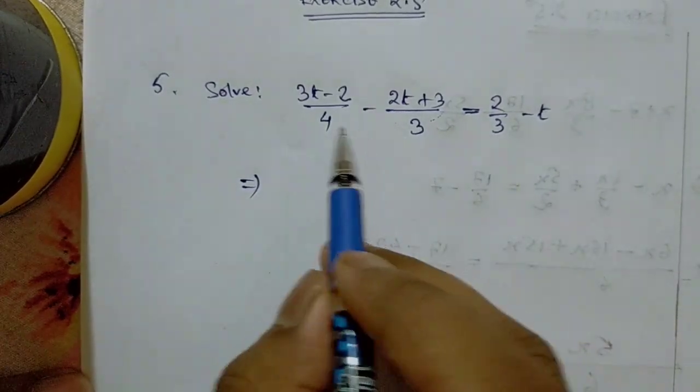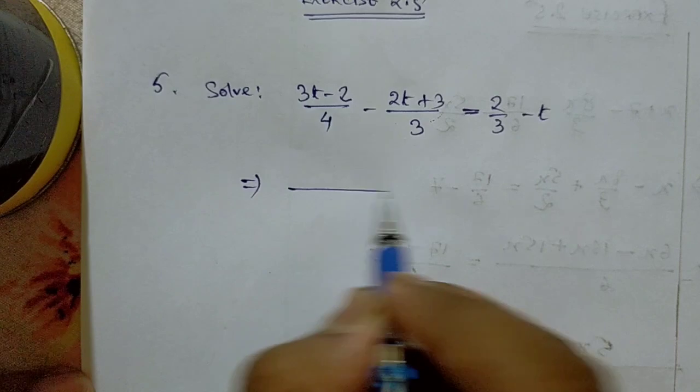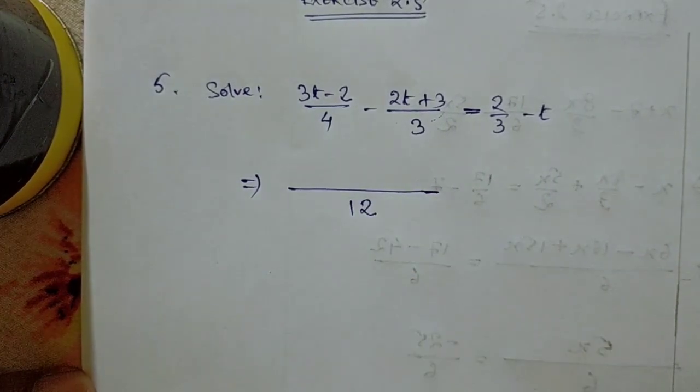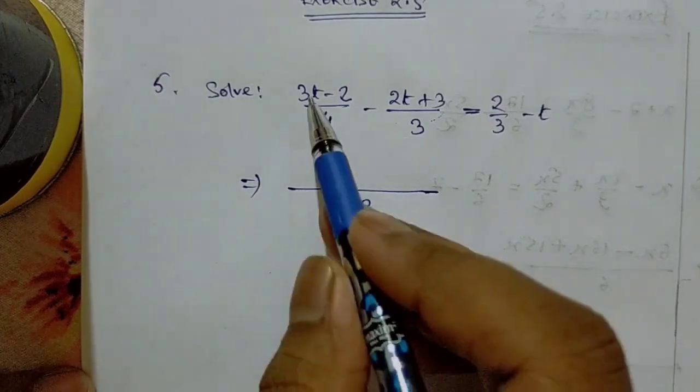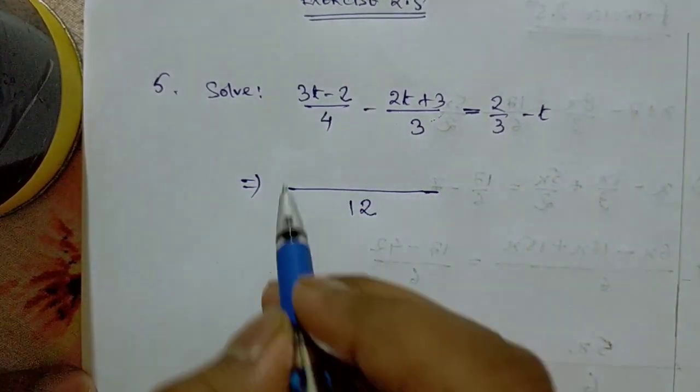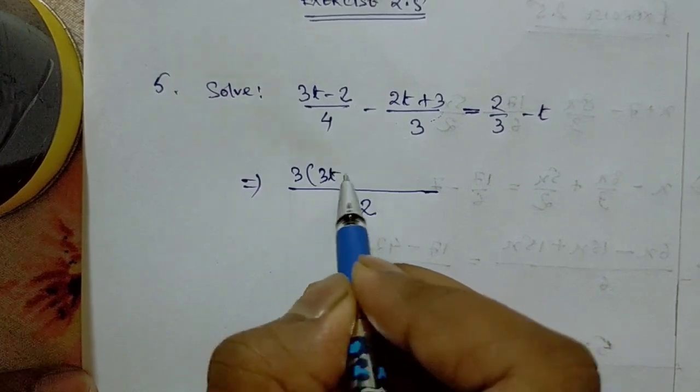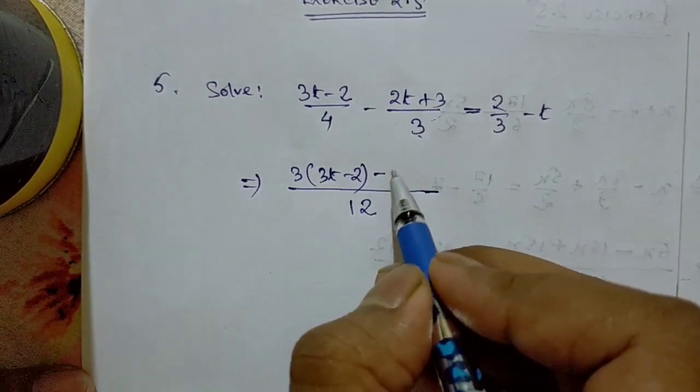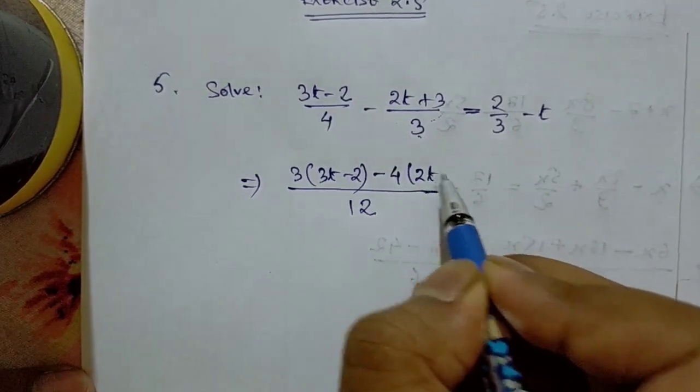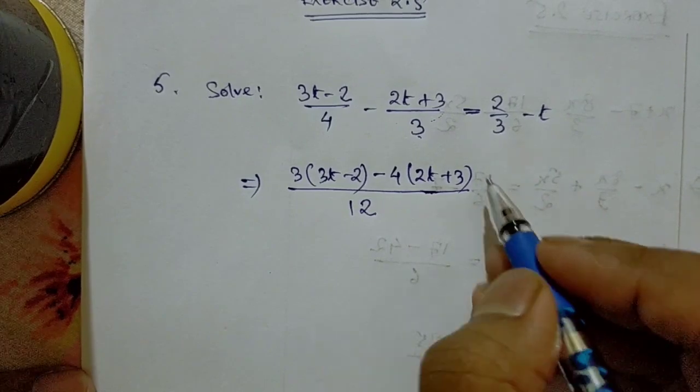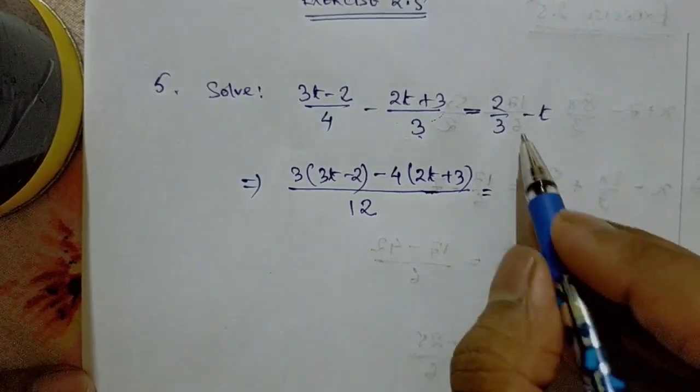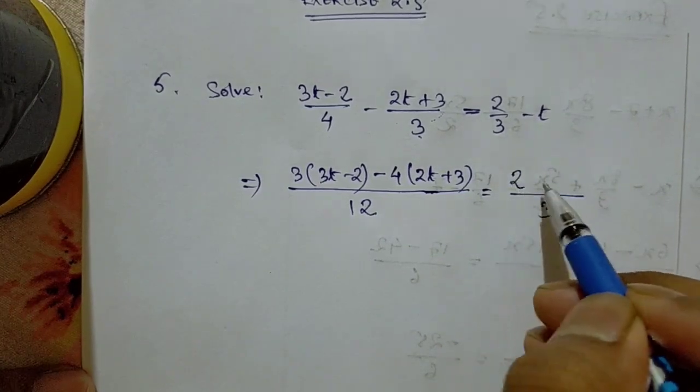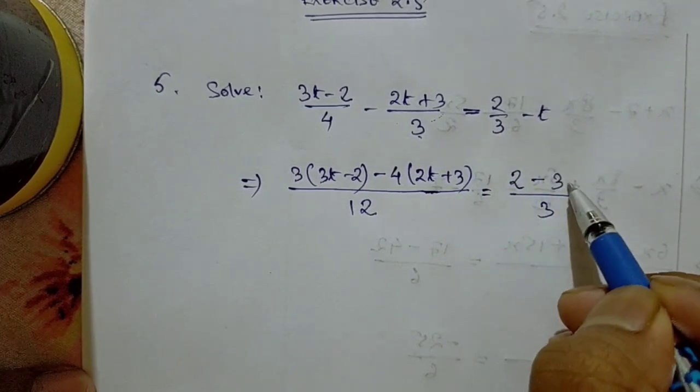What we will do is take the LCM of 3 and 4. LCM of 3 and 4 is 12. 4 times 3 is 12, so 3 times this expression minus 4 times this expression. Then we will take LCM of 3 and 1, which is 3, so here it will be 2 - 3t.